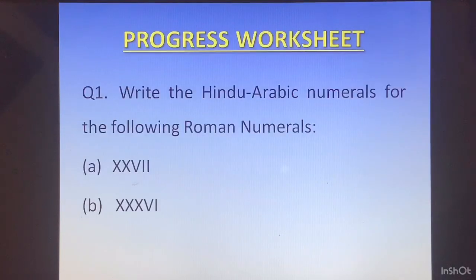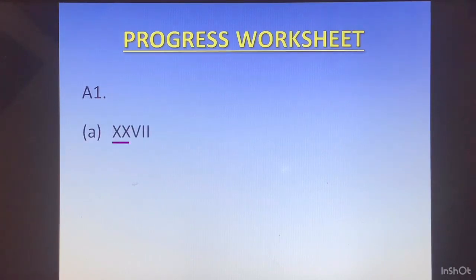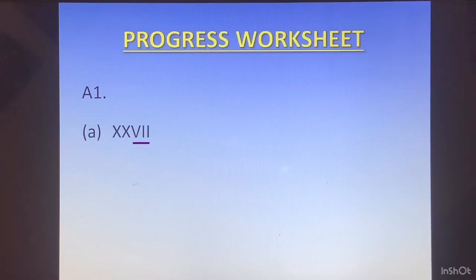Question number 1: Write the Hindu-Arabic numerals for the following Roman numerals. First is XXVII. XX is 20, and VII is 5 plus 2, which is 7. So that will become 20 plus 7, which is 27.